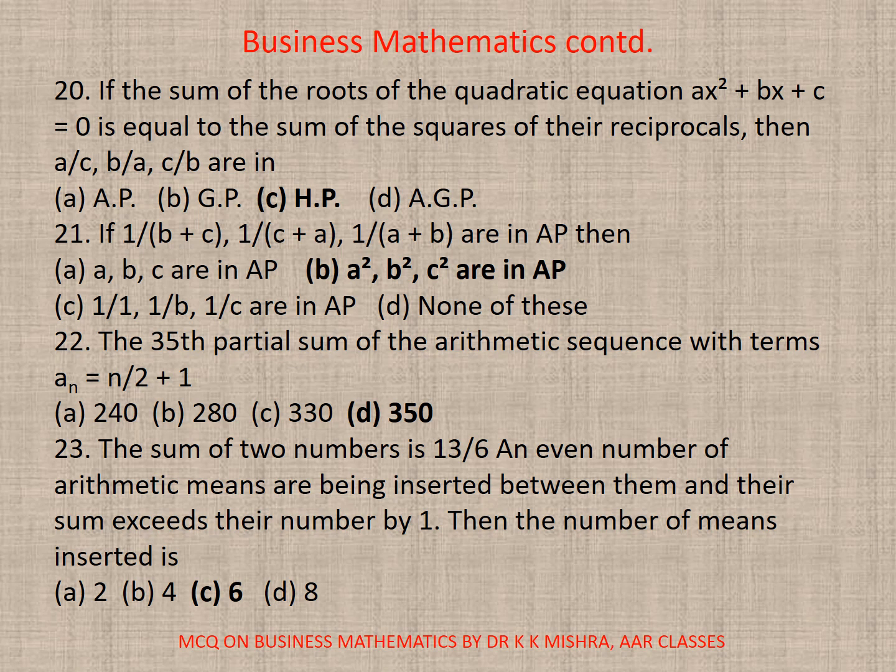Question 22. The 35th partial sum of the arithmetic sequence with terms AN = N/2 + 1. Here if you calculate, you will find D as correct answer, 350. Question 23. The sum of two numbers is 13/6. An even number of arithmetic means are being inserted between them, and their sum exceeds their number by 1, then the number of means accepted is 6. That is, correct option is C.